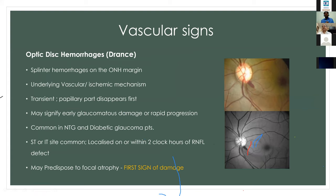The vascular signs include optic disc hemorrhages — also called Drance hemorrhages — which are splinter hemorrhages present on the surface of the optic nerve head and on the adjacent extrapapillary retina. Such splinter hemorrhages can be an early sign of glaucoma, potentially causing focal atrophy at that point. In an already existing glaucoma, a Drance hemorrhage indicates very fast progression, with a corresponding notch and RNFL defect. In such cases, treatment should be aggressive or intensified.